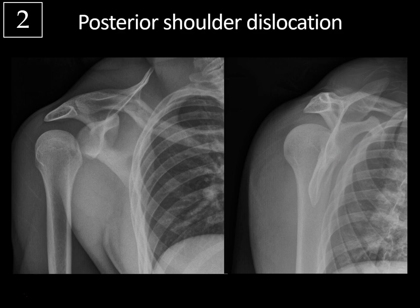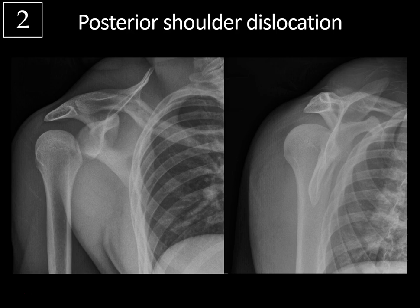Posterior shoulder dislocations are not very common — only about 2% to 4% of all shoulder dislocations — and they're classically associated with seizures or electrical shock, and because of that they may actually be bilateral. These can be tricky to detect on the frontal view because the humeral head won't be as obviously displaced as with anterior dislocation. The humeral head will typically be fixed in internal rotation giving the lightbulb sign. Normally you have a half-moon overlap with the humeral head and glenoid, but not with posterior dislocation because the humeral head is displaced laterally.